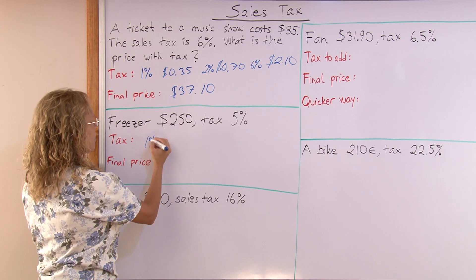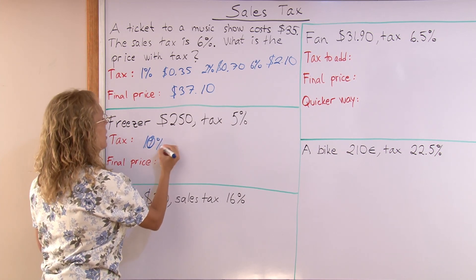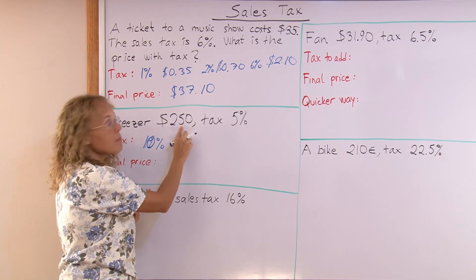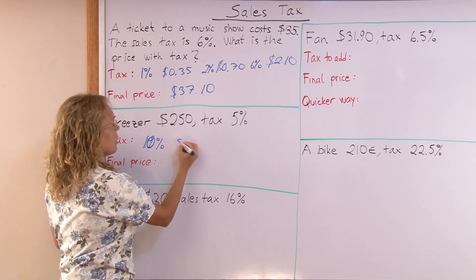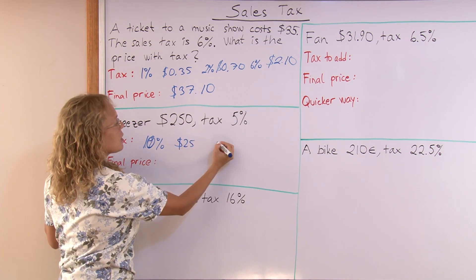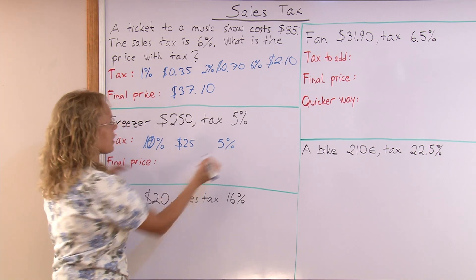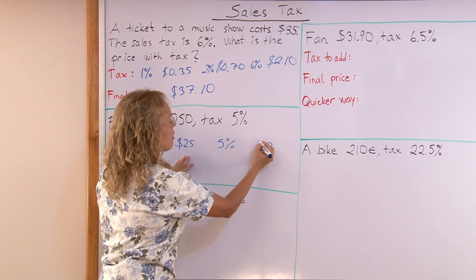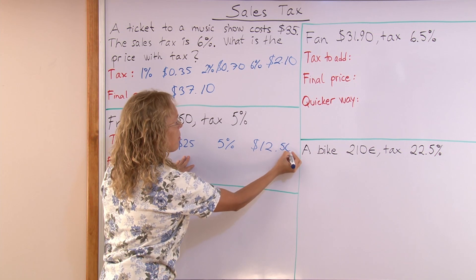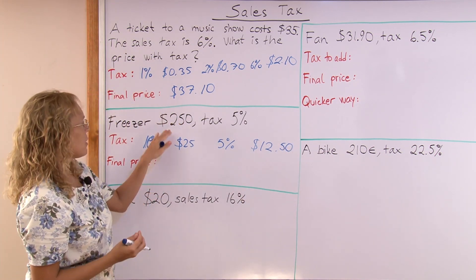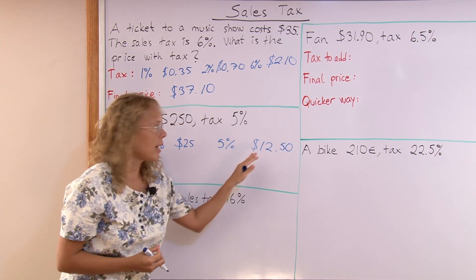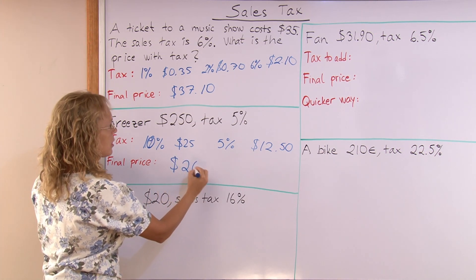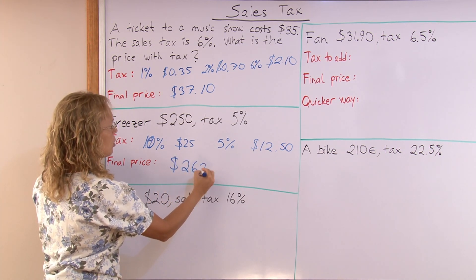To calculate the tax we could think first of 10%, because 5% will be just half of 10%. So 10% would be the tenth part of this number — divide by 10 — which is $25. And so 5% will be exactly half of this, or $12.50. Then we add the base price and the tax to get $262.50.